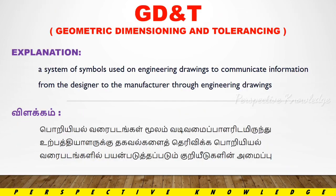GD&T is Geometric Dimensioning and Tolerancing. It is a system of symbols used on engineering drawings to communicate information from the designer to the manufacturer through the engineering drawing, from one customer definition.